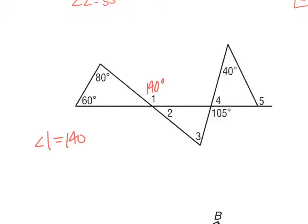I know that angle 1 and angle 2 are supplementary, so they add up to 180. Since angle 1 is 140, angle 2 has to be 40 degrees. Then looking elsewhere in the figure, I see that 105 degrees and angle 4 are supplementary, so angle 4 plus 105 equals 180.